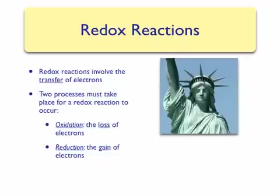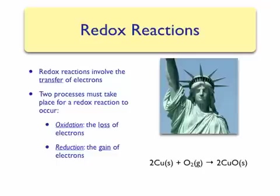A good example of a redox reaction is the reaction that caused the Statue of Liberty to turn green. The Statue of Liberty was constructed out of copper. However, over a few decades, the copper reacted with the oxygen in the atmosphere to produce copper(II) oxide. The copper(II) oxide is what caused the Statue of Liberty to turn green. In this reaction, copper goes from having no charge to having a plus two charge. Since it lost electrons to become more positive, we can say that the copper was oxidized.